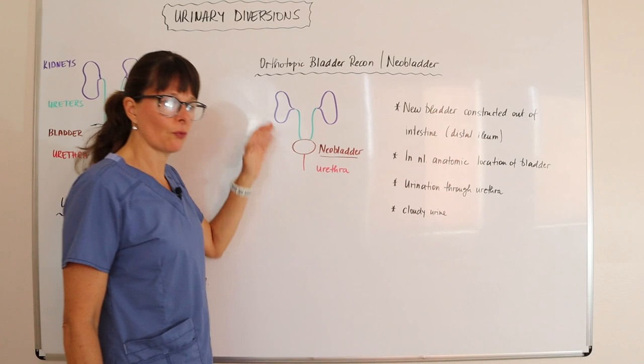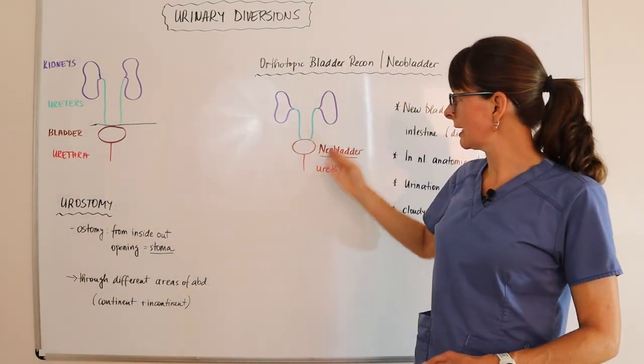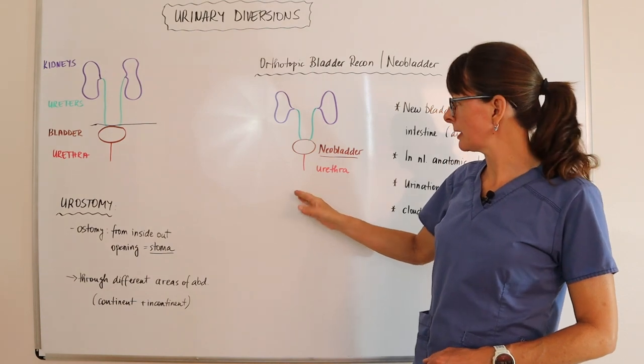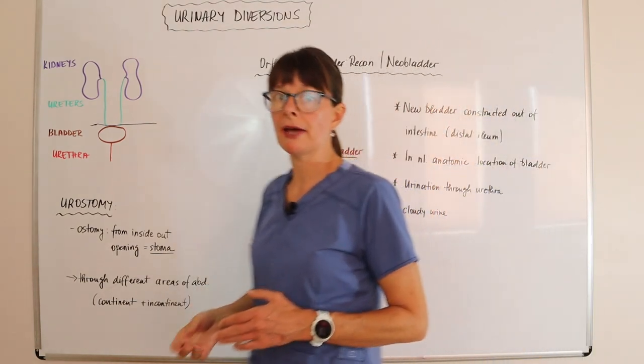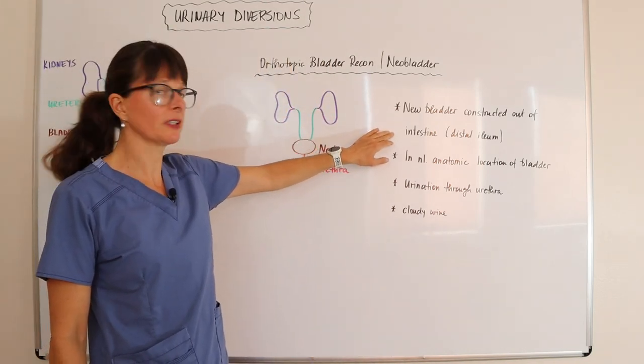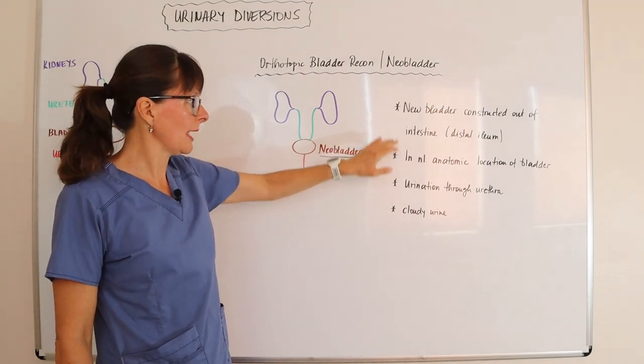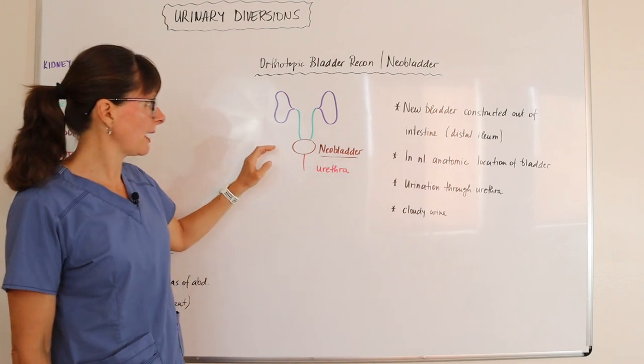So really from an anatomical standpoint it is very much the same. But we don't have the normal bladder that was there. We have this new bladder now and that is usually constructed out of a portion of the distal ileum and it is located in the normal anatomic location of the bladder.